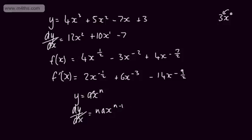In general, if y = ax^n, the derivative dy/dx = nax^(n−1). This is simply saying multiply down by the power and drop the power by 1. In this unit, we're going to look at differentiating products, quotients, and functions of functions.